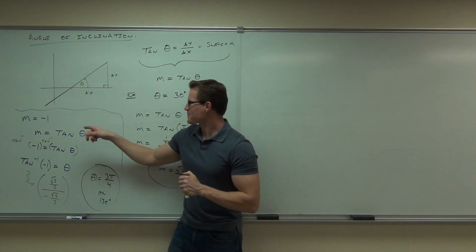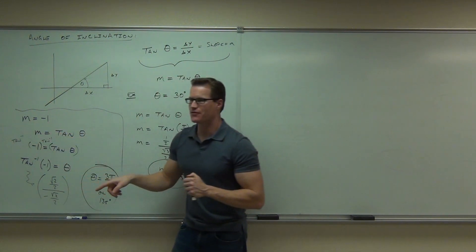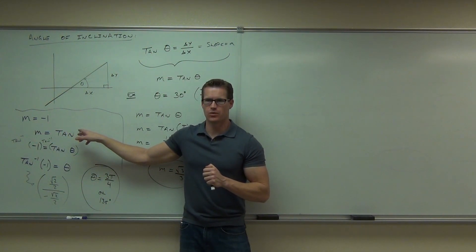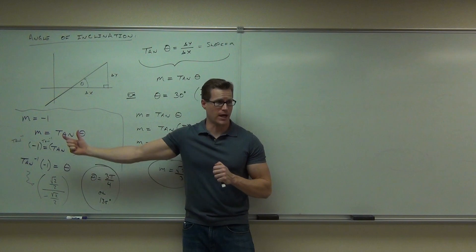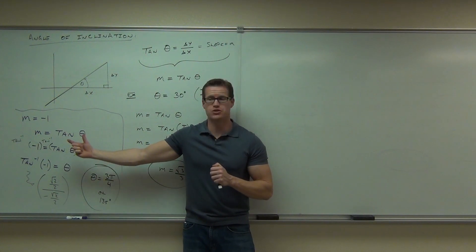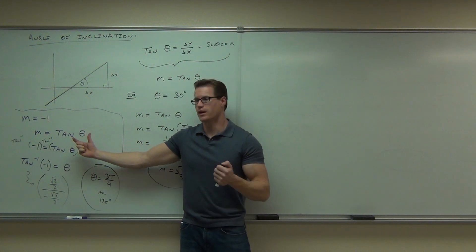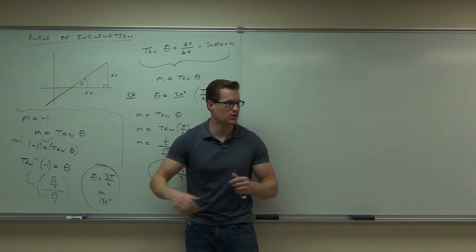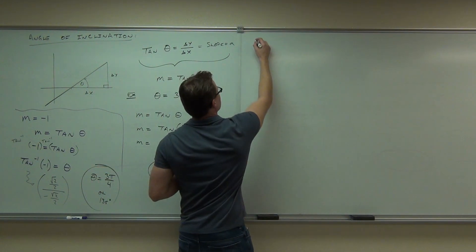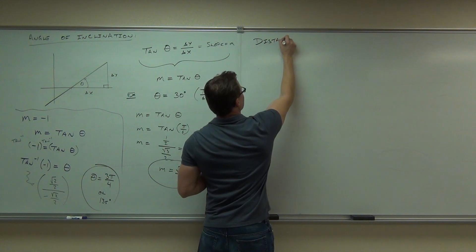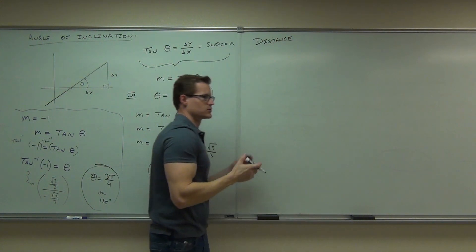If I say the slope is 1 half, can you find tangent where the angle would give you 1 half? Could you do it with a unit circle? Okay, practice that stuff. That's what I'm looking for.